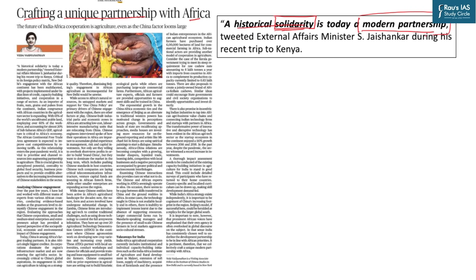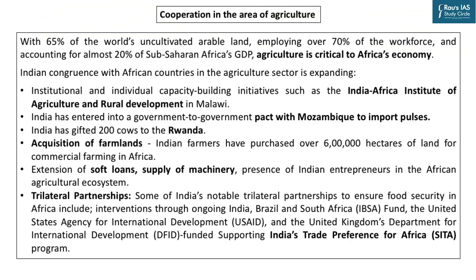In this modern partnership, the article deals with the unique partnership that can develop in agriculture. Our discussion here is confined to agriculture, although India's relation with African nations is multifaceted — covering infrastructure development, capacity building, soft loans, lines of credit, knowledge sharing, and support on international fora. Agriculture is an extremely relevant area because 65% of the world's uncultivated arable land is in Africa and 70% of the African population is involved in agriculture.